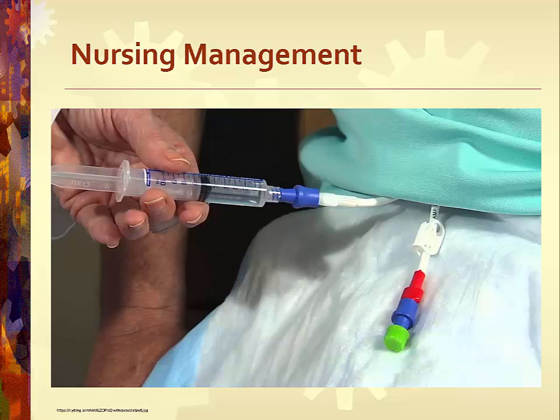Change injection caps at regular intervals per institutional policy. Use strict sterile technique and turn the patient's head to the side opposite of the central VAD insertion during cap changes. If the catheter cannot be clamped, instruct the patient to lie flat in bed and perform the Valsalva maneuver. Flushing is one of the most effective ways to maintain lumen patency and prevent occlusion. The push-pause technique creates turbulence within a catheter lumen and promotes removal of debris. This involves injecting saline with rapid alternating push-pause motion, instilling one to two mLs with each push on the syringe plunger after giving medication. It also decreases the risk for clotting.